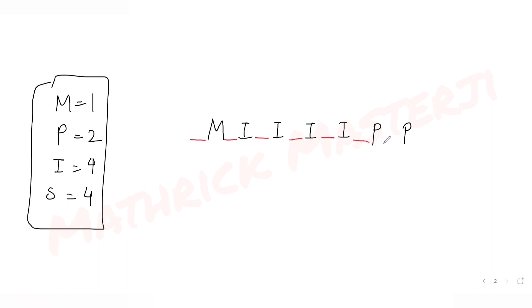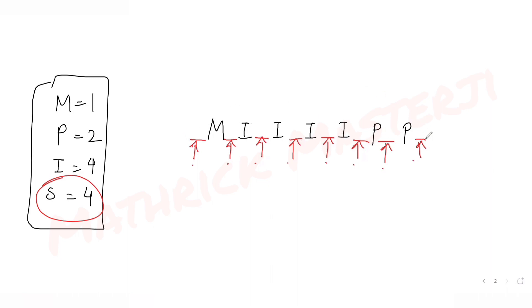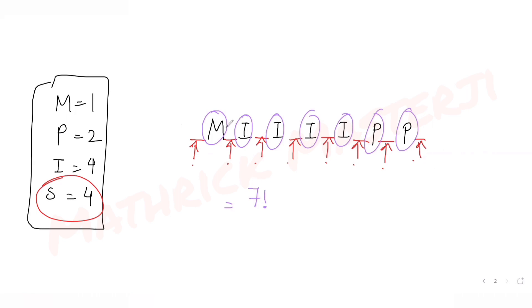Since no two S's can be together, I can place the S's in the gaps between these other letters. So first I arrange all the non-S letters. Looking at the gaps available — one before, one after, and one between each letter — I count 1, 2, 3, 4, 5, 6, 7, 8: eight possible positions for S.